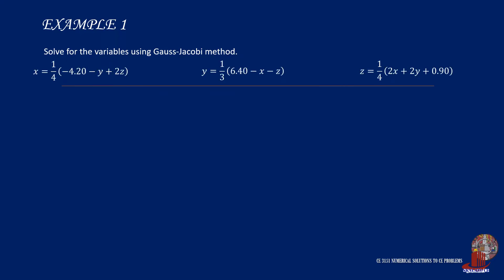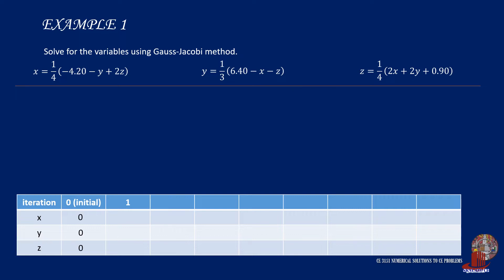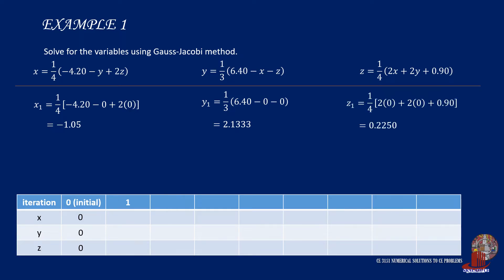We can start iterating where the initial values are assumed as 0. x₁ is computed as one fourth of negative 4.2 minus 0 plus twice of 0, giving negative 1.05. y₁ is taken as one third of 6.4 minus 0 minus 0, giving 2.1333. z₁ is one fourth times twice of 0 plus 2 times 0 plus 0.9, giving 0.2250. These are the first iteration results.